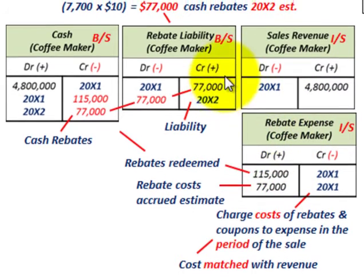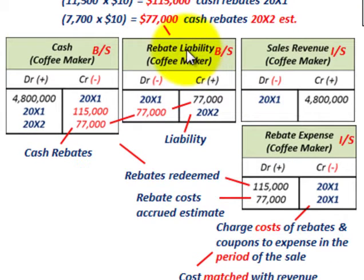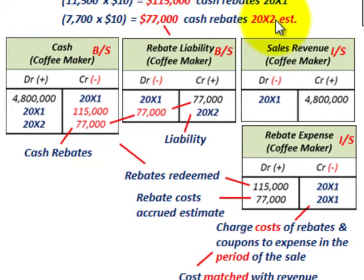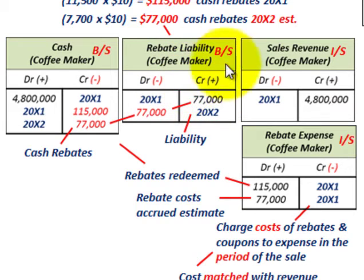Since we're in the first year, we have to set up a liability account for the $77,000 worth of cash rebates estimated for the second year, because that obligation is sitting on our books. In 20X1, we would credit a rebate liability on our balance sheet for $77,000.